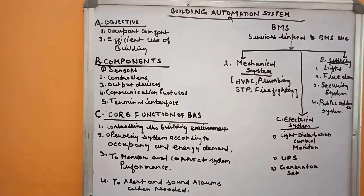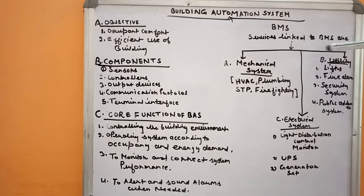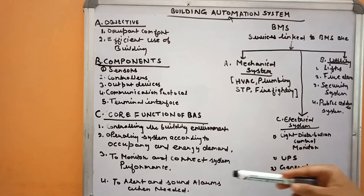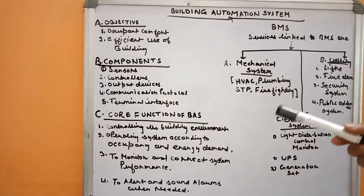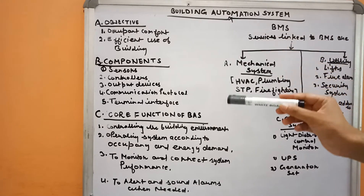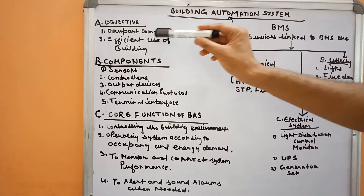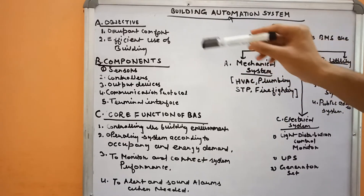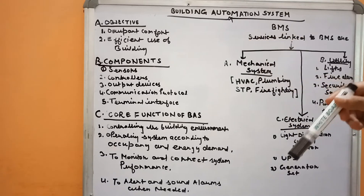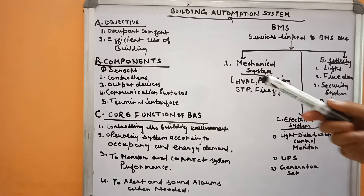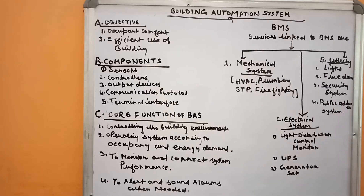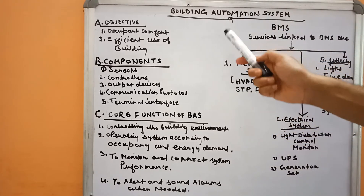Hello all. Today we will discuss about the building automation system. A building automation system is generally a centralized system for controlling all the services in a building. The objective of a building automation system is occupant comfort and efficient use of buildings — ensuring the desirable comfort level for occupants, efficient use in terms of cost, maintenance, operations, and of course security. When these components are fulfilled, we can say that the building is efficient.